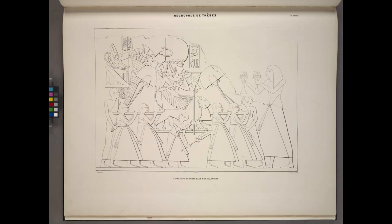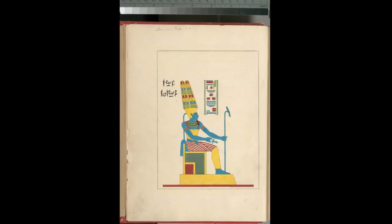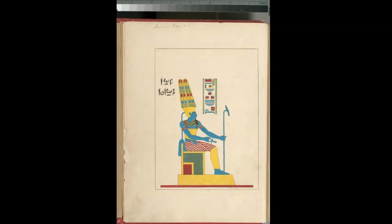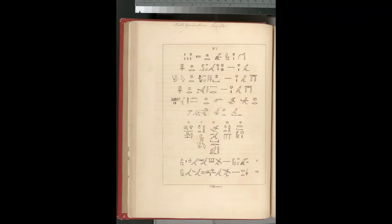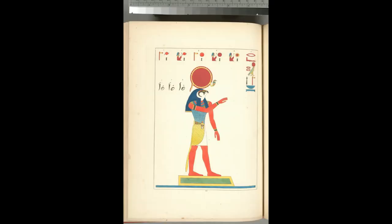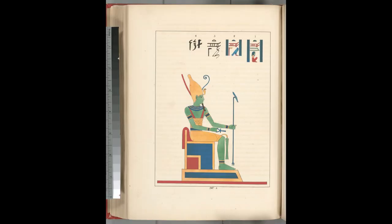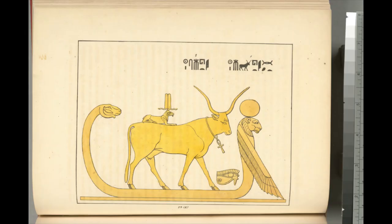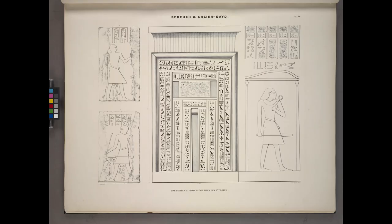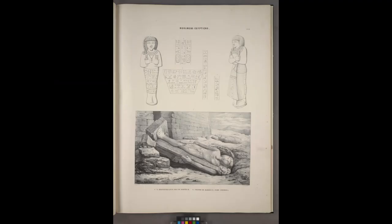Ancient Egyptian artwork is one of the more popular niches in the print-on-demand world — we're talking pharaohs, pyramids, hieroglyphs, and those weird half-human, half-animal creatures. In this video I'm going to walk through two sources that you can use to create ancient Egyptian artwork. These sources are completely free and legal to use.